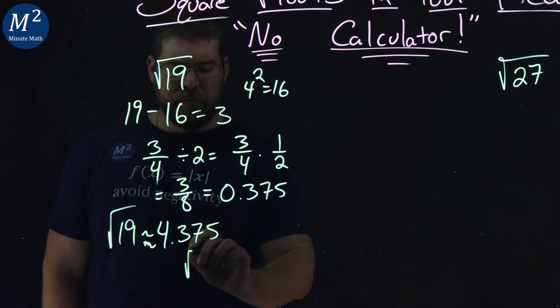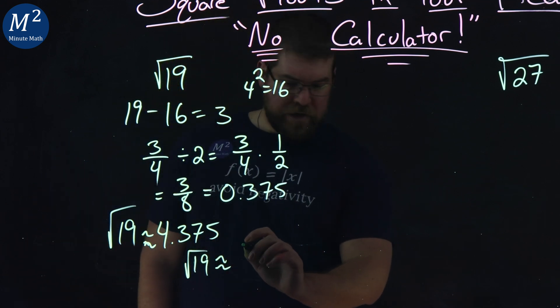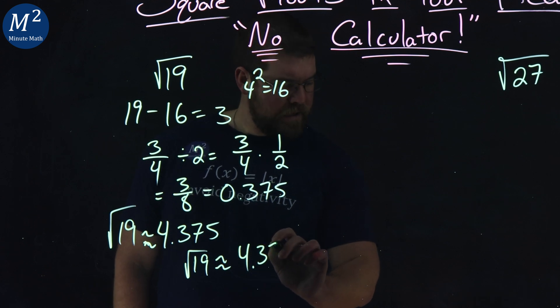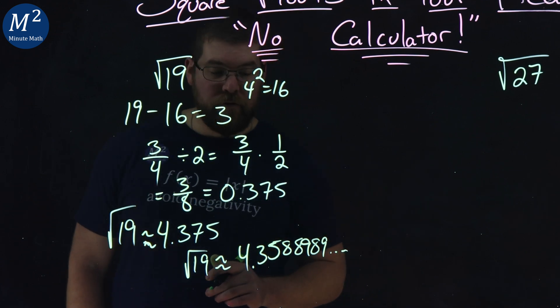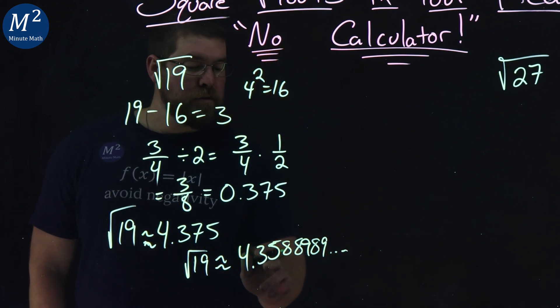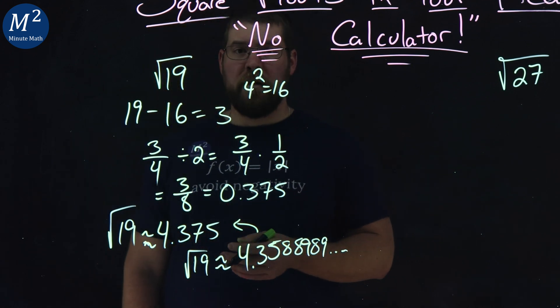Now, the square root of 19, still an approximation form, but using a calculator I've written down, is 4.3588989 going on forever. That's a pretty darn close approximation that we can quickly do those steps in our head.